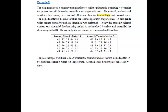To help decide which method should be used, an experiment was performed. 25 randomly selected workers each assembled the chair using method A, and another 25 workers each assembled the chair using method B. The plant manager would like to know whether the assembly times of the two methods differ. A 5% significance level is judged to be appropriate. Assume normal distribution of the assembly times.